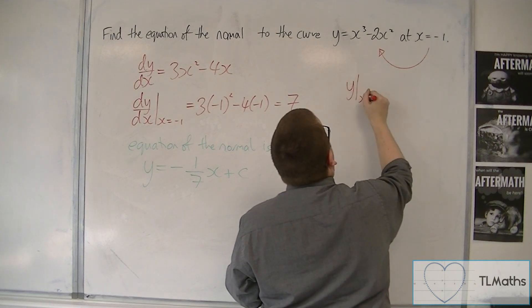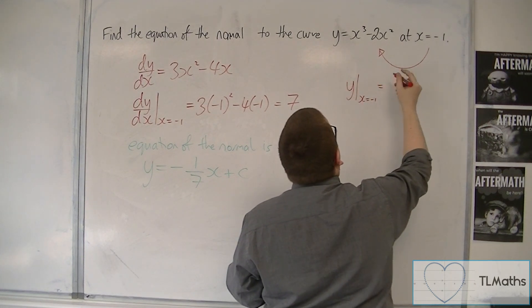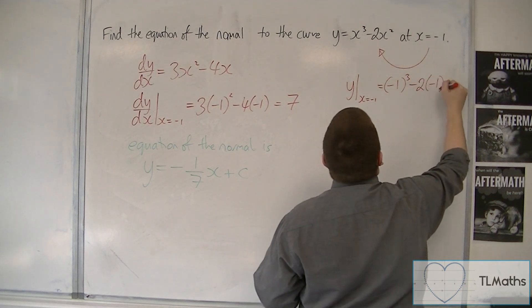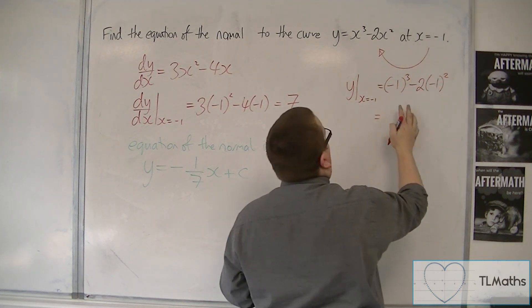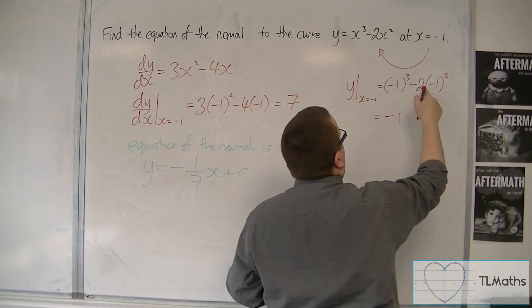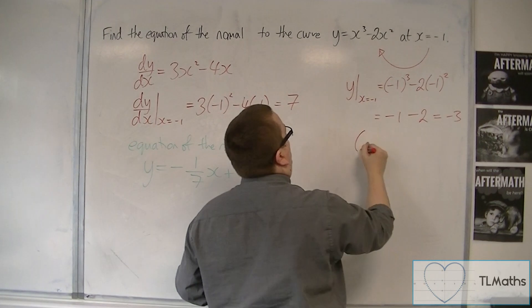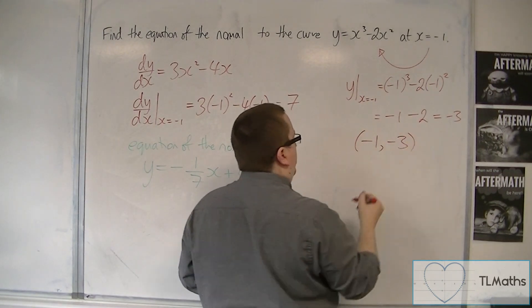So y when x is equal to minus 1 is equal to minus 1 cubed, take away 2 lots of minus 1 squared. So we get minus 1 take away 2, and so that's minus 3. So the coordinates are minus 1, minus 3.